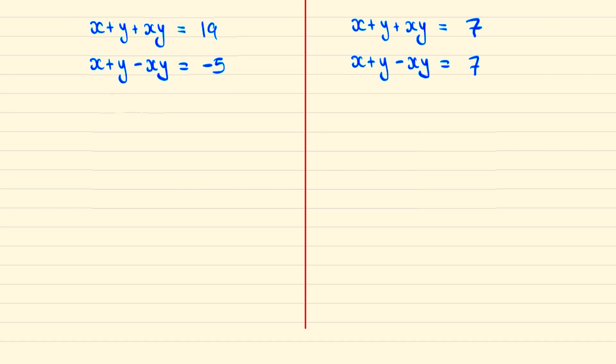If we look at the equation on the left first then by adding them we're going to cancel out these xy terms so that we have 2x plus y is equal to 19 minus 5 and therefore x plus y is equal to 7. And we can recognize that should we minus them from each other then we'll cancel out these x's and y's and thus we'll have 2xy is equal to 19 minus minus 5 or xy is equal to 12. And so numbers which add to 7 and multiply to 12 can be 3 and 4 or 4 and 3.